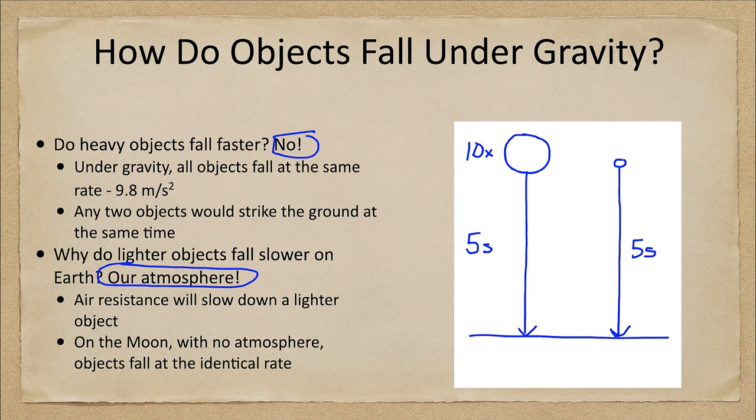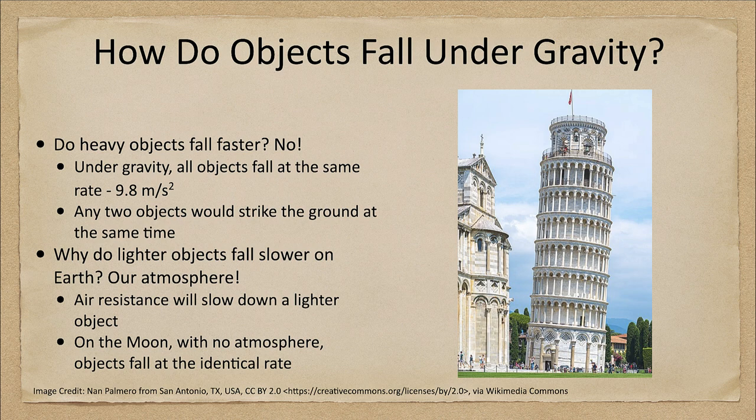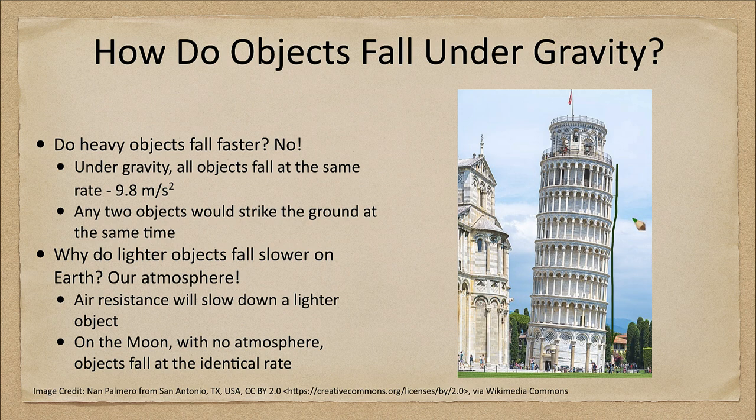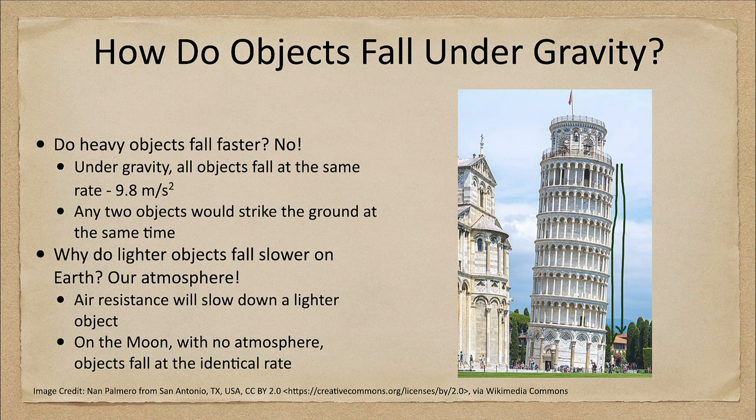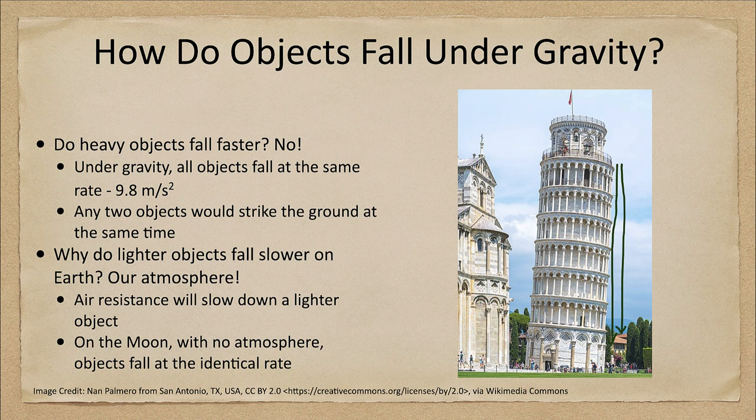For example, one of the famous examples would be Galileo when he supposedly did the experiment from the Leaning Tower of Pisa, dropping a wood ball and an iron ball from the same point and letting them both fall, finding that yes, they strike the ground down here at exactly the same time. Now would there have been a slight difference? Yes, the lighter ball would have felt more air resistance and would not have fallen as quickly, but you would not have the significant difference that you would expect under the physics that held at the time. So we found that yes, under gravity, all objects fall at the same rate.